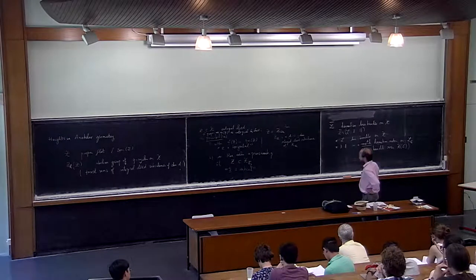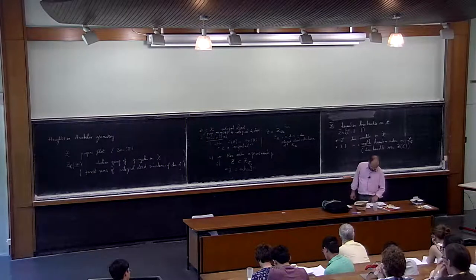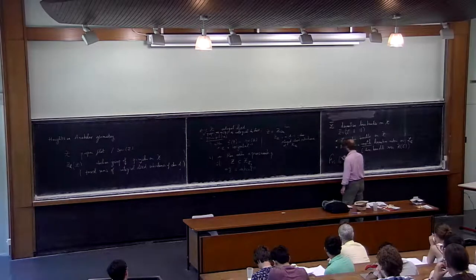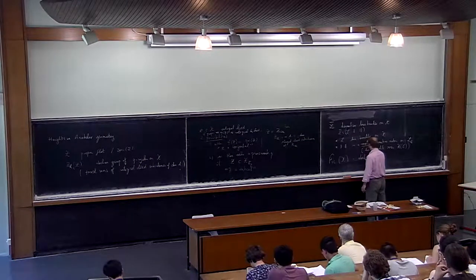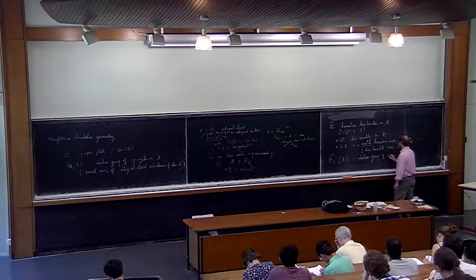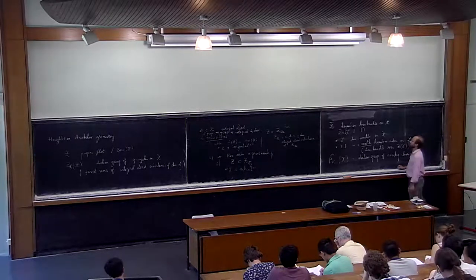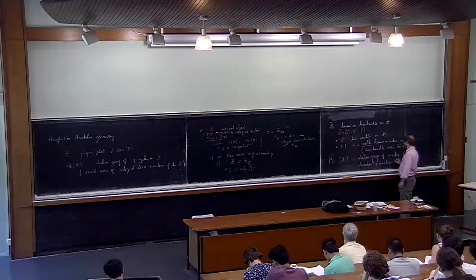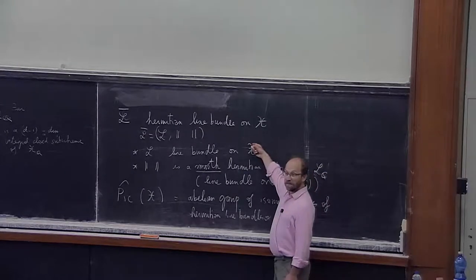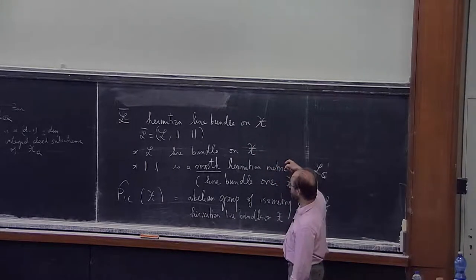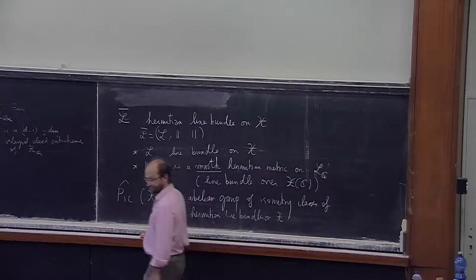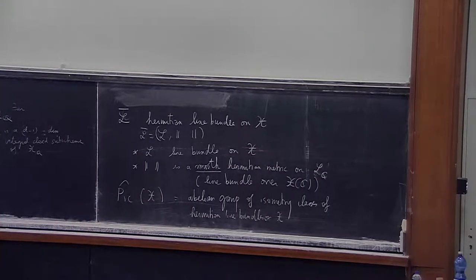So that is the input. And maybe I will need a notation: Pic-hat of X, which is an abelian group of isometry classes of Hermitian line bundles. That's an abelian group because I can multiply line bundles together, and if I have two line bundles L1 and L2 endowed with Hermitian metrics, then the tensor product has a natural Hermitian metric.